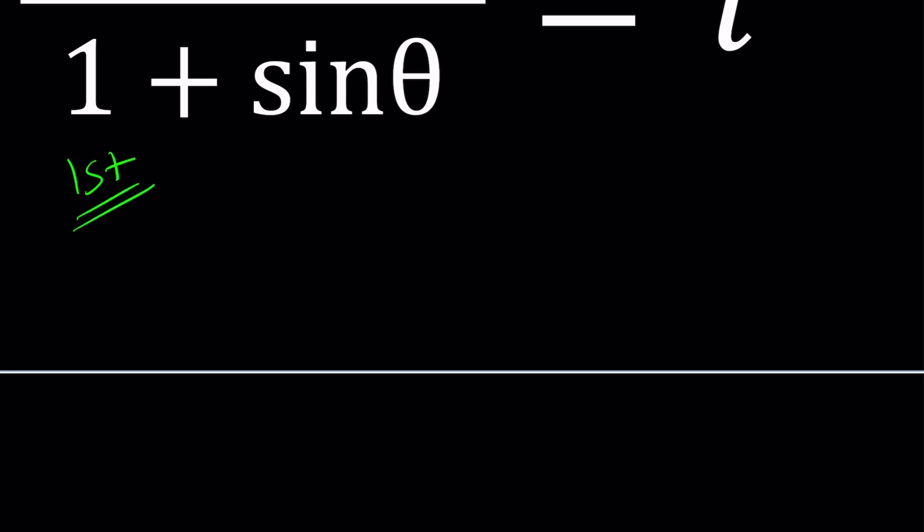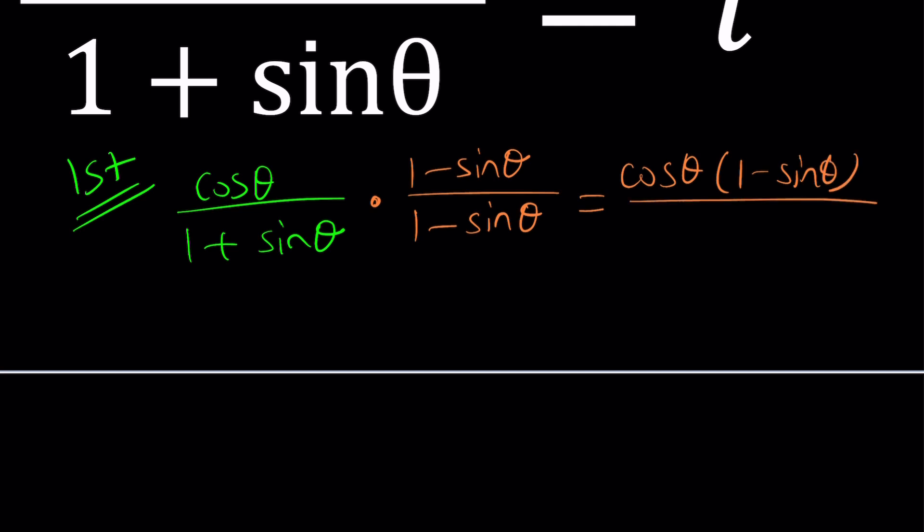First method, and I'm not necessarily saying that all these methods are conclusive but we'll make an attempt. So I noticed that we have one plus sine theta in the denominator which prompts me to multiply it by one minus sine theta which is its conjugate. And when you multiply those two things you know from difference of two squares we get something nice. So let's go ahead and write it down.